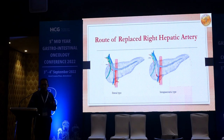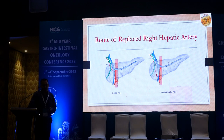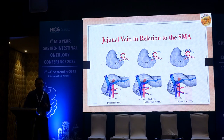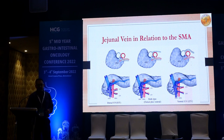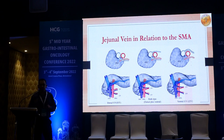The next point is the route of the replaced right hepatic artery — it can be a dorsal type from early division from the SMA, or it can be an intra-pancreatic type, which you need to see on pre-operative imaging. Regarding the jejunal vein, you need to know whether the first jejunal vein is a dorsal type, where J1V and J2V are, whether J1V is ventral and J2V is dorsal, or whether both veins are ventral type — so you have to clip them sequentially.